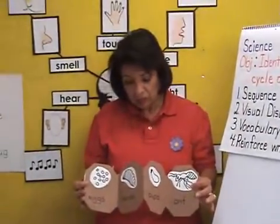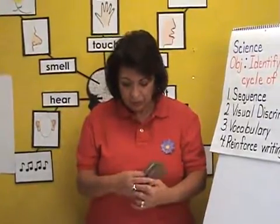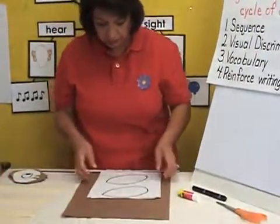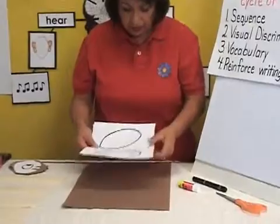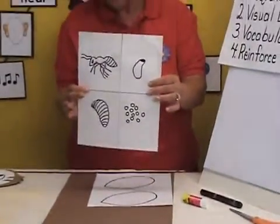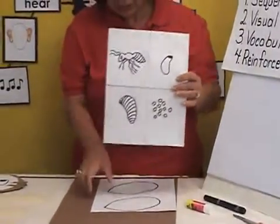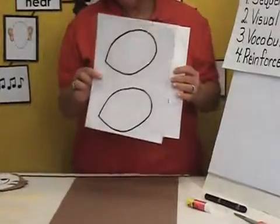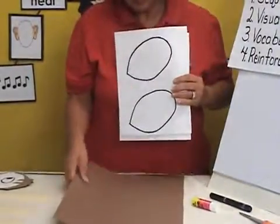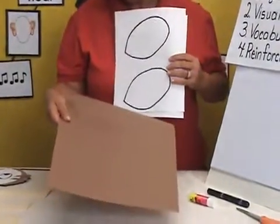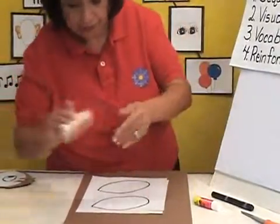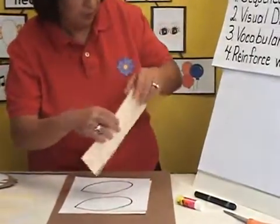To begin this activity you're going to need the life cycle of the ant activity sheet, the little face of the ant, a long construction paper, and the vocabulary — the stages of the ant.